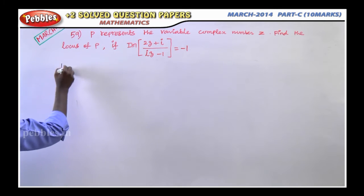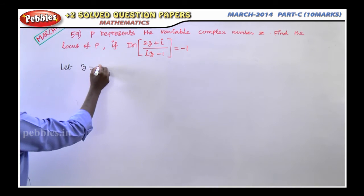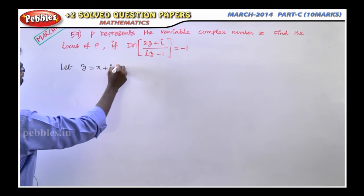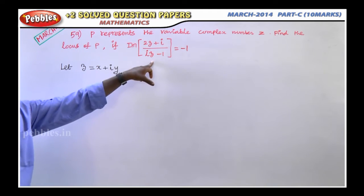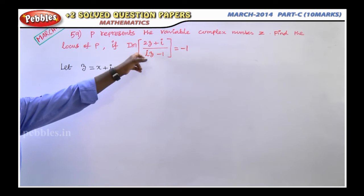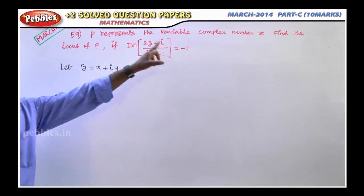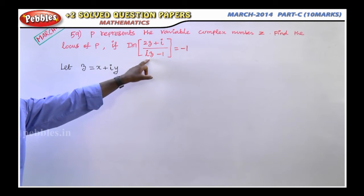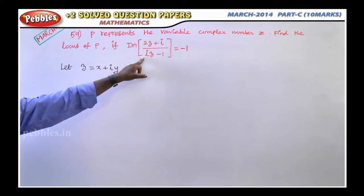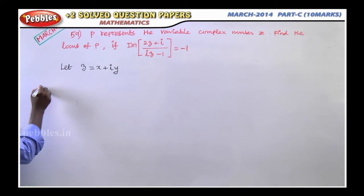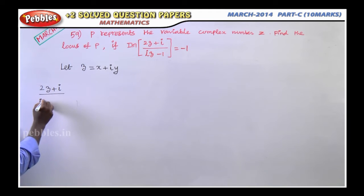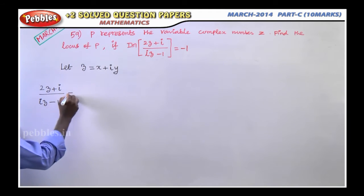In the problem, Z is a complex number in standard format, that is Z = X + iY. There is a condition given in the bracket involving a complex number, where the imaginary part equals minus 1. This complex number is not in standard format, so we need to convert it. The expression is: 2Z + i divided by iZ minus 1.